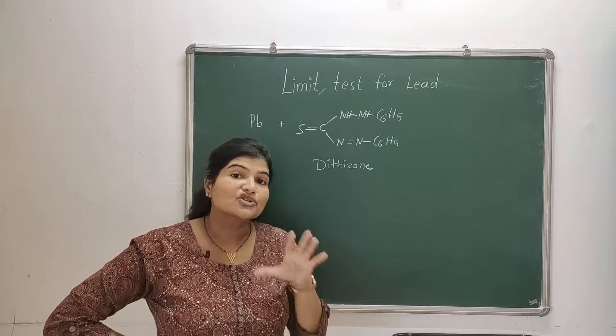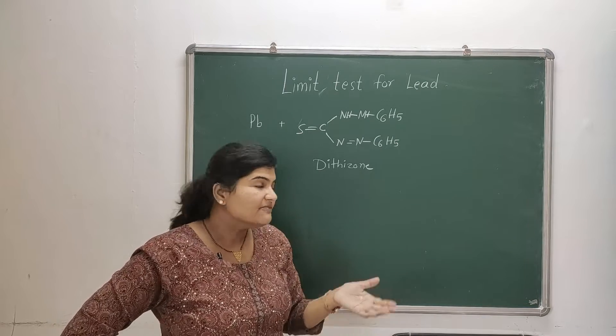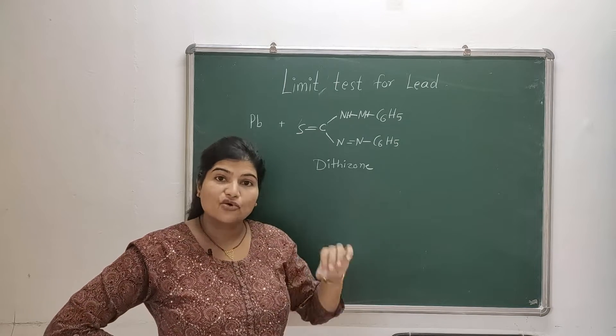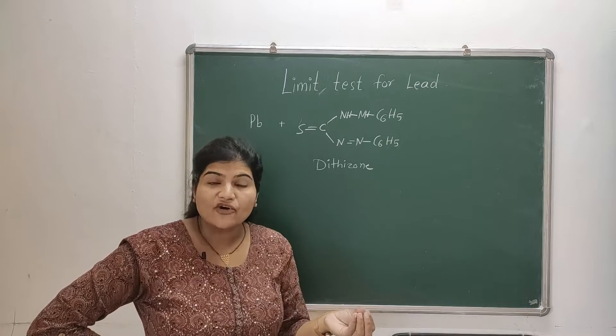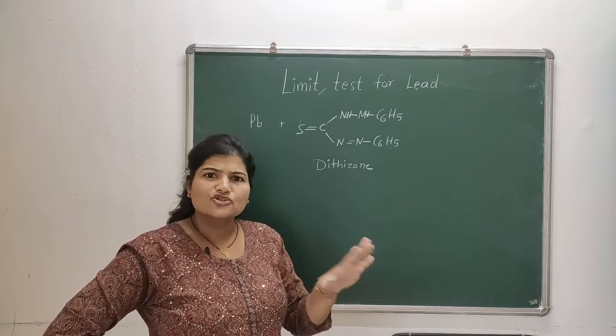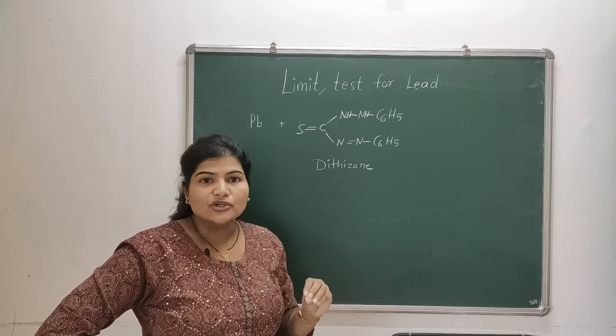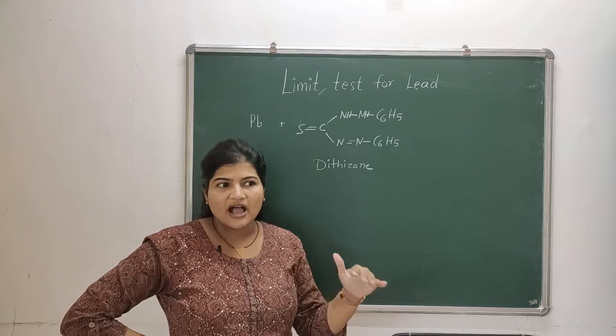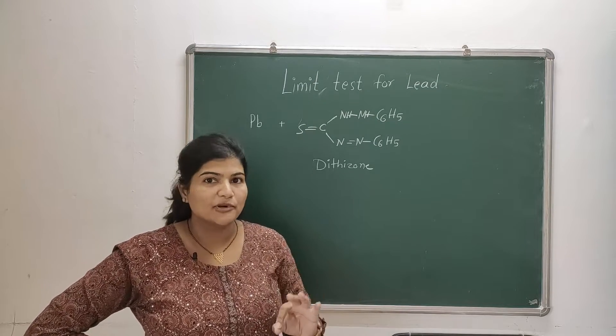Now how is this solution prepared? This dithizone is dissolved in chloroform and ethanol and it is stored in refrigerator. Before using, it has to be shaken with about half the volume of 1% volume by volume nitric acid solution.